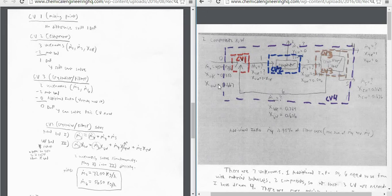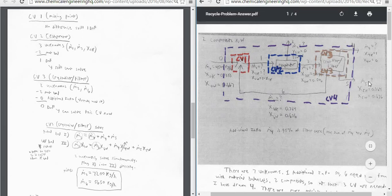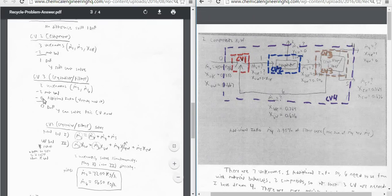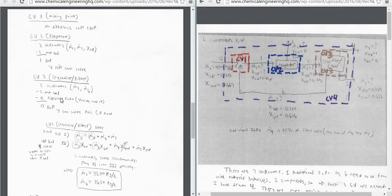But if we look at the control volume 3, we have two unknowns, which is M3 coming in and M6 coming out, because we've already solved for M4 and M5. And we have two material balances, but we don't have that additional information anymore because we've already used it. But even still, we have zero degrees of freedom, and we can now solve for this control volume.